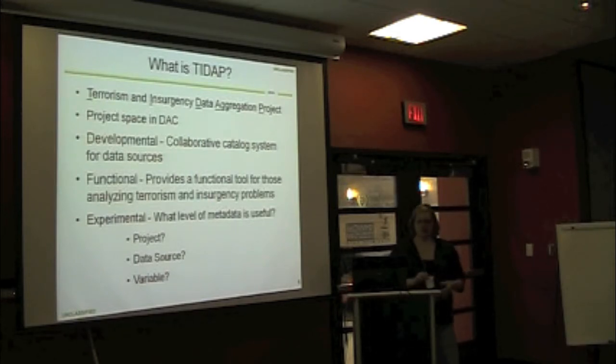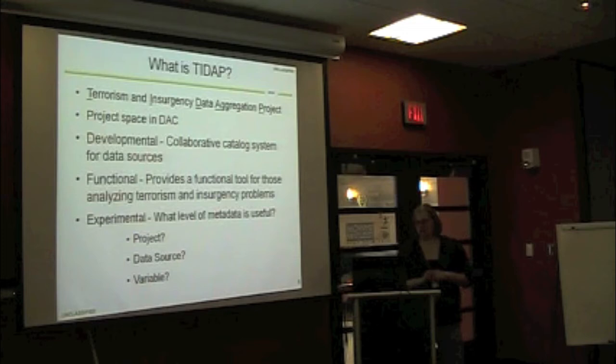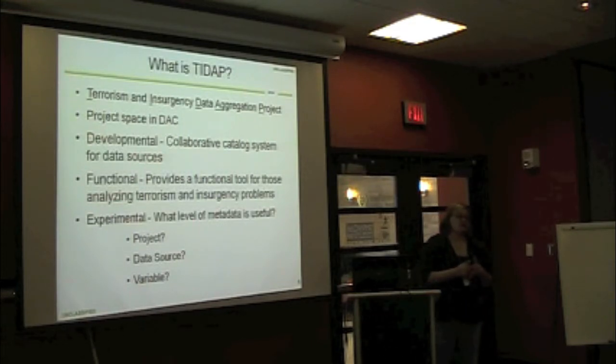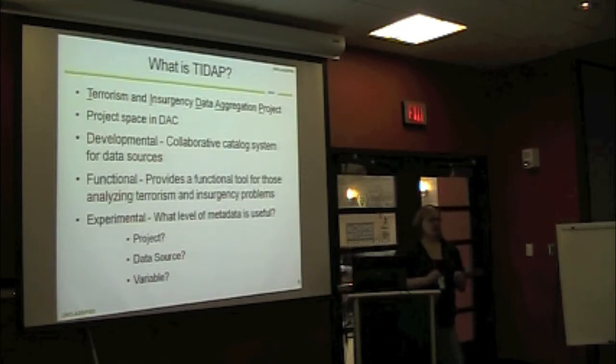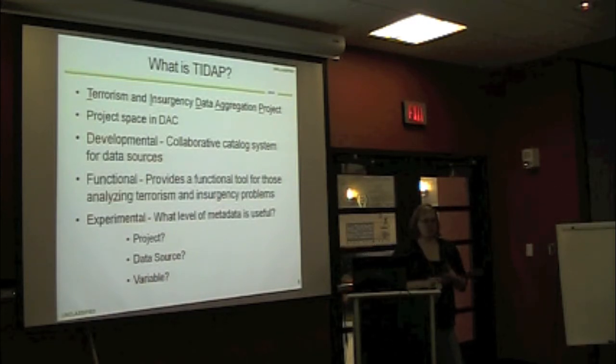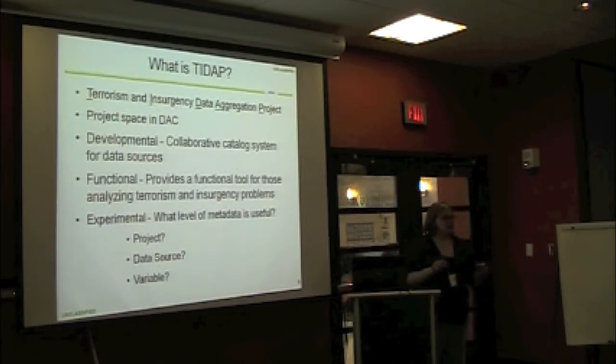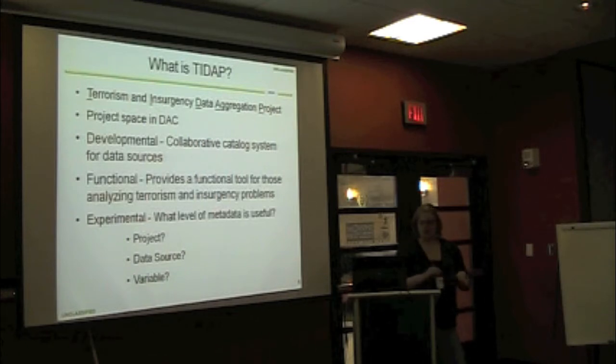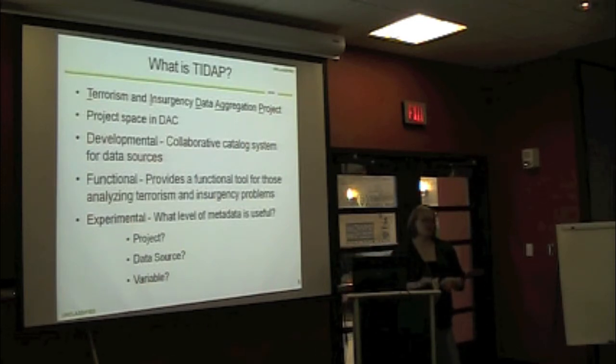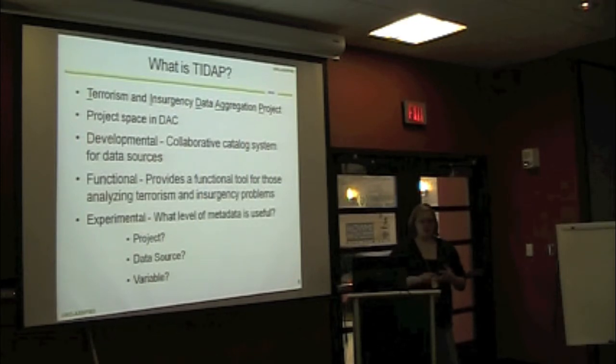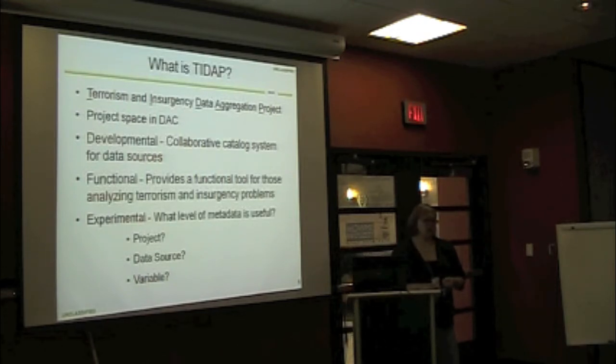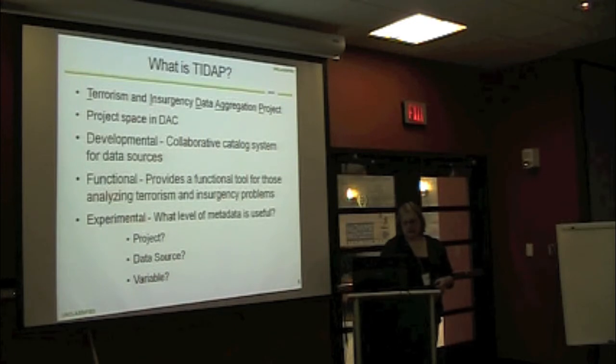We wanted to do a collaborative cataloging system, and the functional portion provides a tool for analyzing terrorism-specific data and insurgency problems. And the biggest portion was they wanted to find out what is the best level of data that people were looking for. Was it at the project level, which is a group of people collecting a bunch of other data and collecting them in different data sources? Or was it one level below that in the data source level? Or was it even down to the variable level? So this was a very detailed data collection project. They went even down to the variable level to say how many variables are in this database, what kind of variable is it, what are the allowed values. So it was very, very detailed.